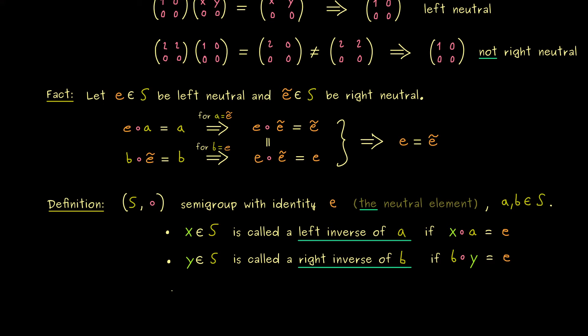And then the last definition is again if we have both things together. So we quickly say Z in S is called an inverse of A if we have both equalities here. And maybe not so surprising this is the definition we will use the most.